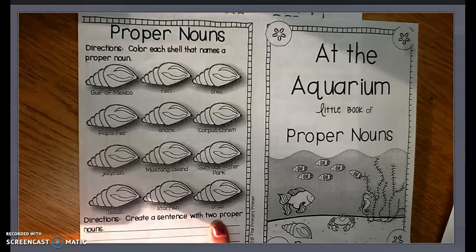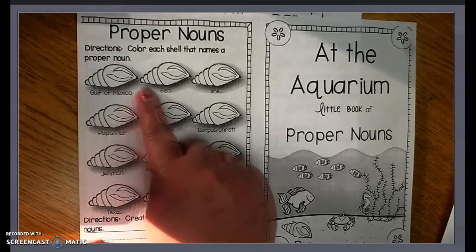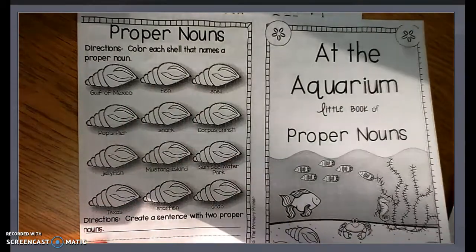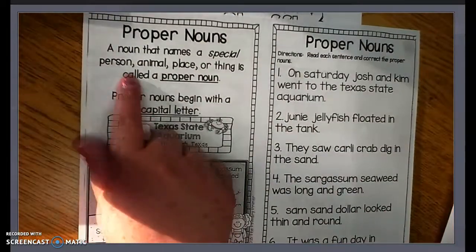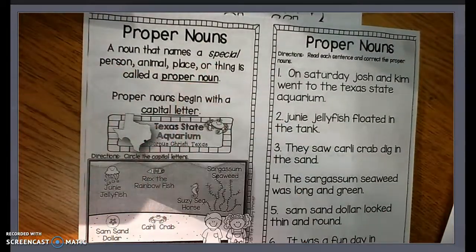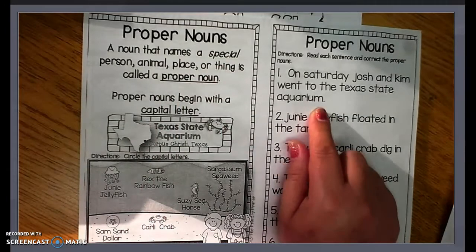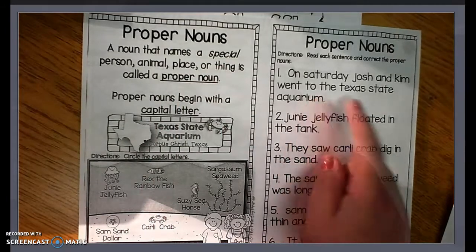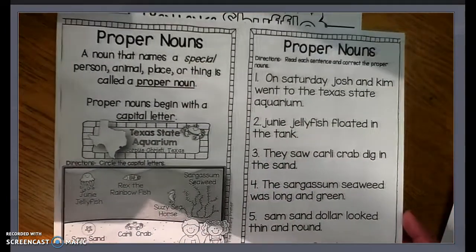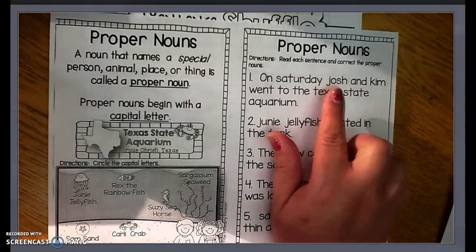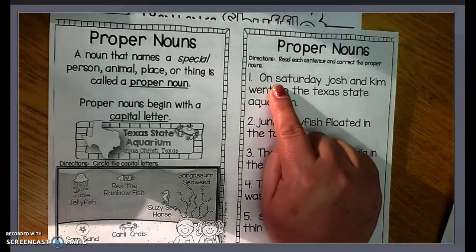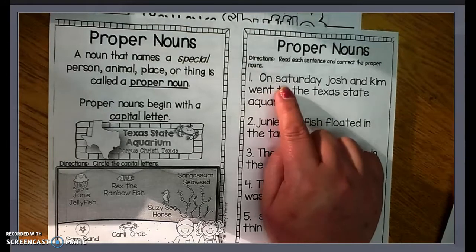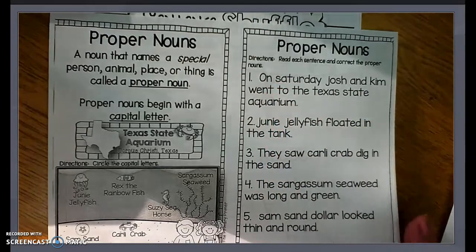You will need to go through and color the ones that are proper nouns. Then you're going to look for the proper noun, read each sentence, and correct what the proper nouns are. For example, if the day of the week is Saturday, the proper noun is always capitalized. So you will need to go through and capitalize all of the proper nouns.